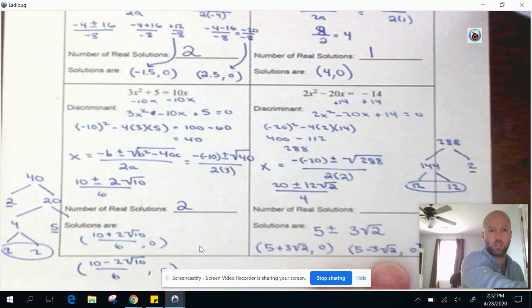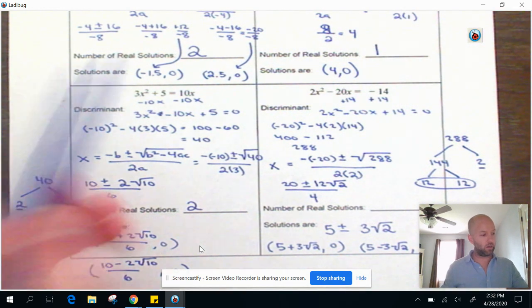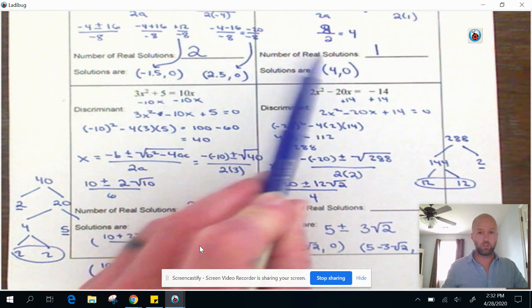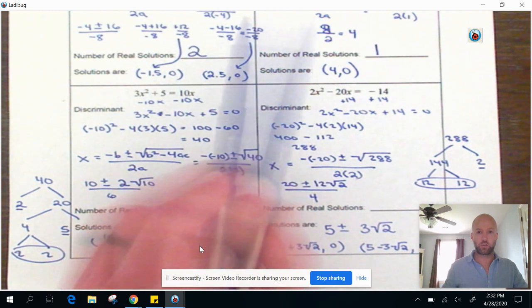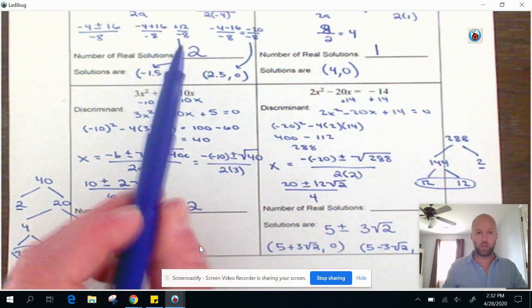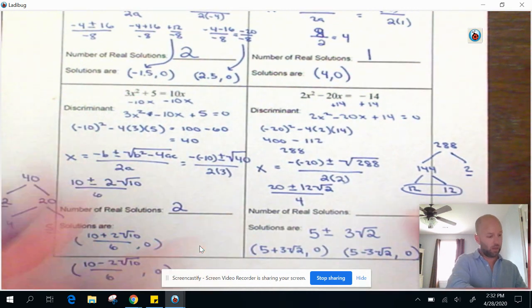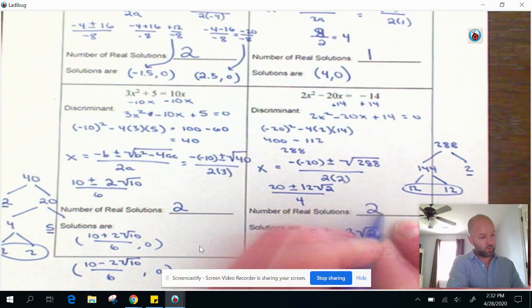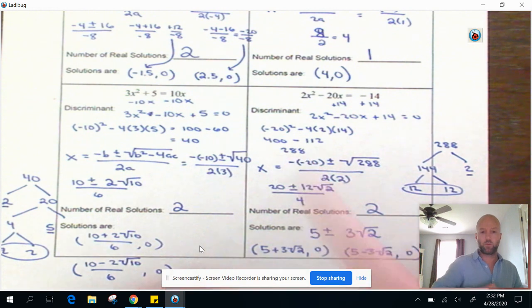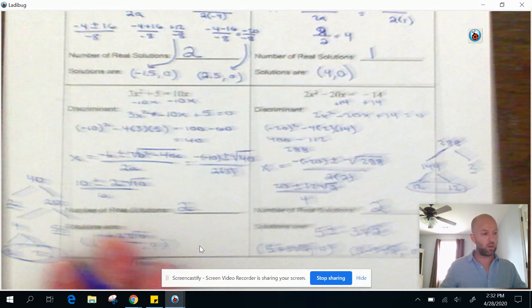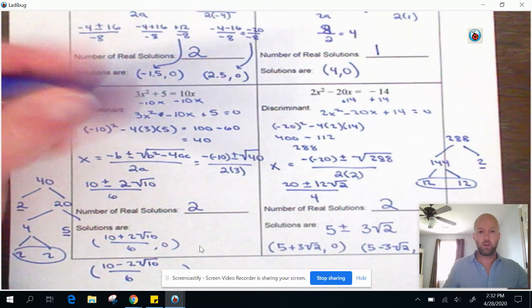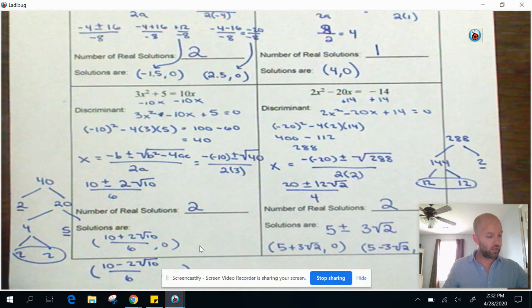And here is how you're going to be graded. So you're going to get a grade for the number of real solutions, but I'm looking at your discriminants. If you don't have your discriminants and you just write in 2 or 1 or 0, we totally forgot to do this part right here. We have two solutions because our discriminant was 288. So I'm looking for work. Make sure you show all of your work on paper and then take a photo of it.